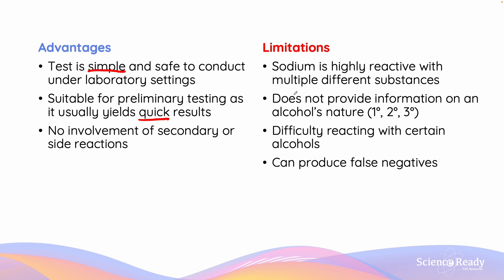The limitations, however, are that sodium is a highly reactive metal and it reacts with multiple different substances. We already saw an example of how sodium reacts with either an acid or an alcohol and both produce hydrogen gas. The problem is that we are unable to use sodium to distinguish between different types of substances, as many of them will react with it. Furthermore, the reaction with the alcohol does not provide information on the alcohol's nature — whether it's primary, secondary, or tertiary. Some alcohols can have difficulty reacting, especially if they are bulky, and a slow reaction or non-reaction may cause the production of a false negative result.